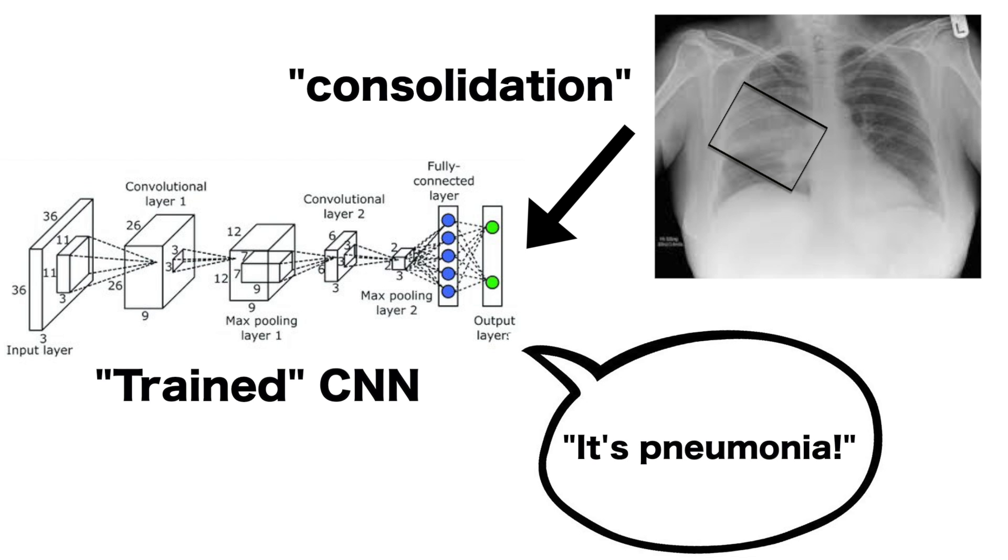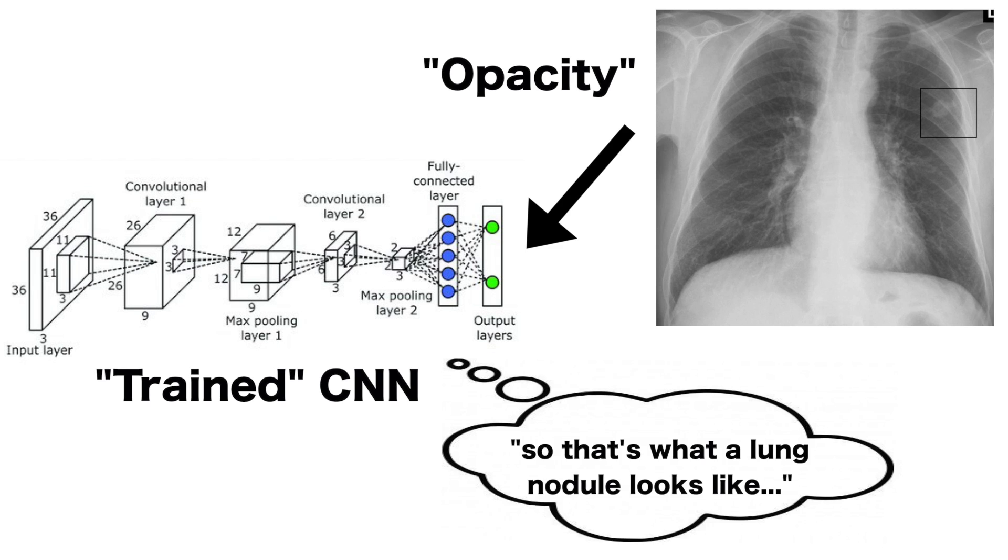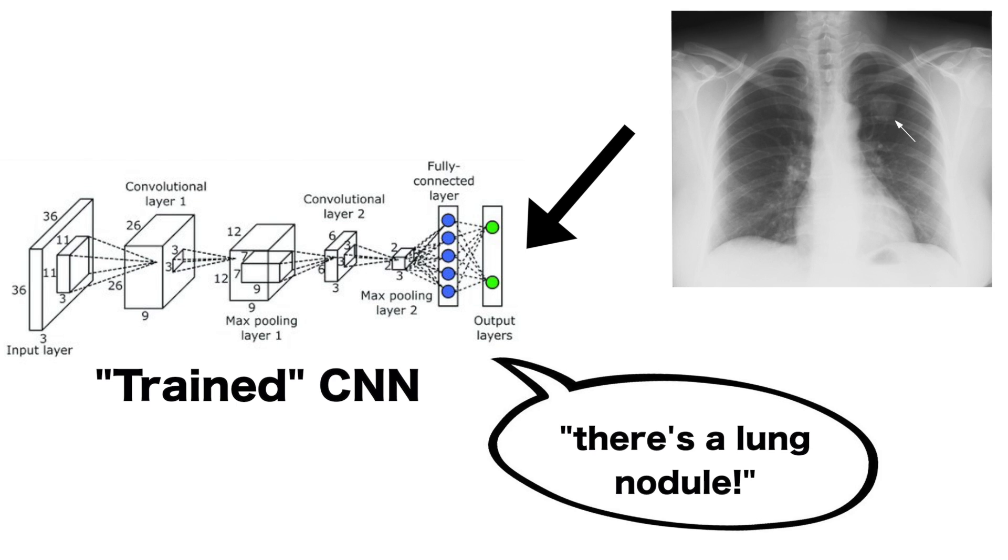And therefore when it's given a new image, it will be able to recognize that consolidation and say that this probably has pneumonia. And likewise it might recognize an area of whiteness or what we call opacity and identify that as being a lung nodule. Then when you present it a new chest x-ray that it hasn't seen the category for, it will identify that there's a lung nodule in that x-ray. So this is pretty cool.